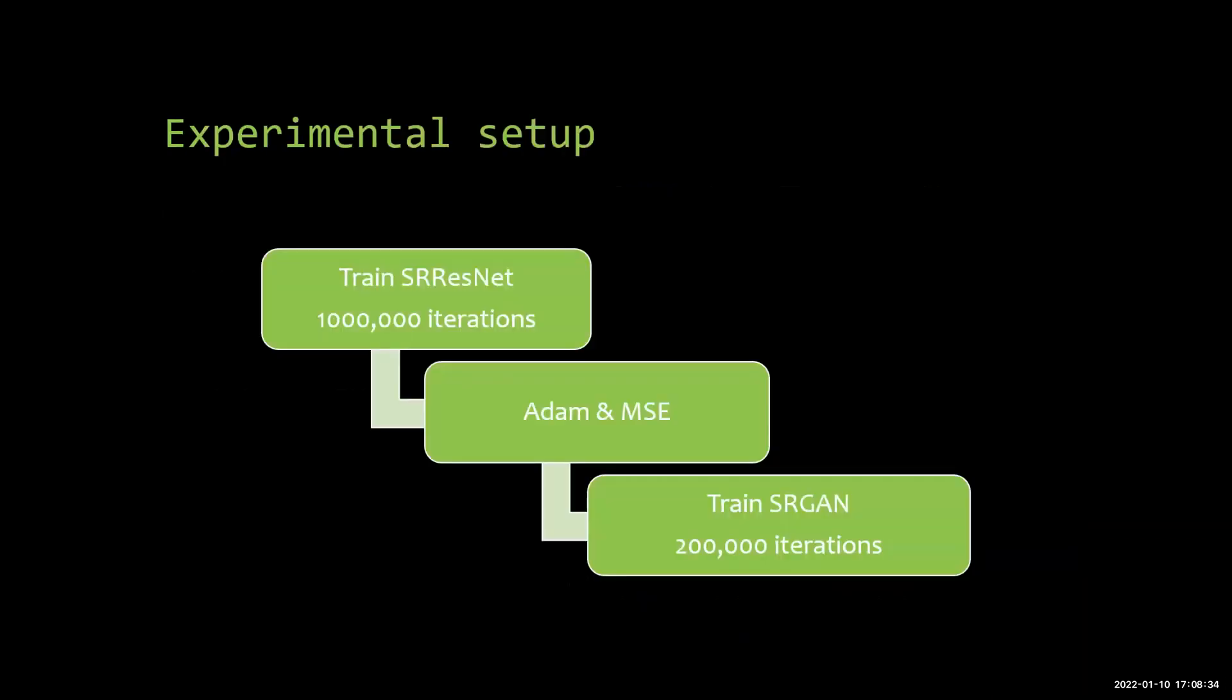For the training, I first trained the SR ResNet, which is the generator network, without the discriminator, for 1 million iterations. That was mentioned in the paper, so I did like they did. And this actually took a lot of time. It was like around two days on a NVIDIA 1080 Ti GPU.